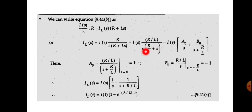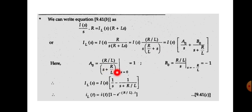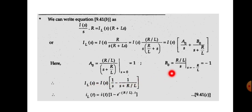So I(S) times (R/L) divided by S·(S + R/L) can be written as A0/S plus B0/(S + R/L). To find A0: multiply by S and set S equal to 0, giving A0 equal to 1. To find B0: multiply by (S + R/L) and set S equal to minus R/L — that is the principle of partial fractions familiarized in the third module — giving B0 equal to minus 1. So IL(S) equals I(S) times (1/S minus 1/(S + R/L)).